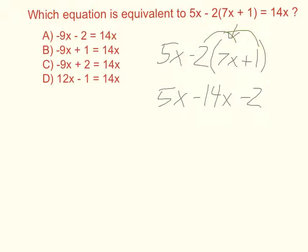We can confirm that is in fact the case because 5x minus 14x is going to be negative 9x. So on the left hand side of the equation I get negative 9x minus 2 and that is equal to 14x. So yes, we can conclude definitively A is the correct answer.